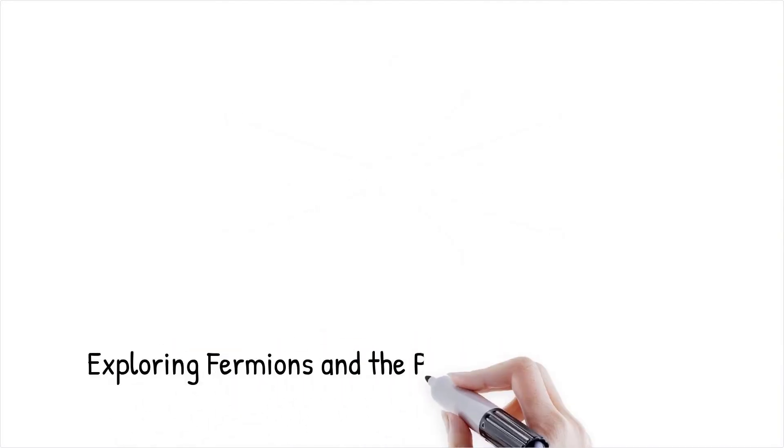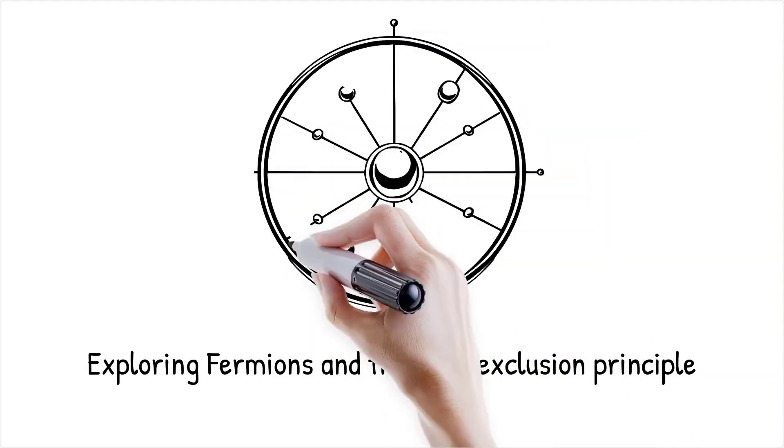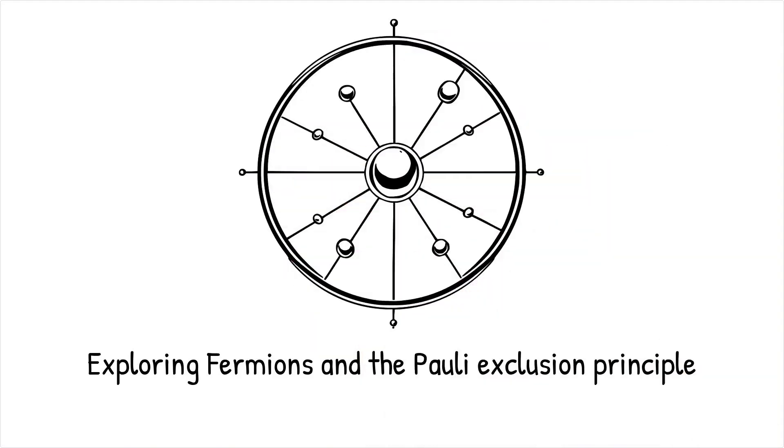Fermions (particles like electrons and protons) obey Fermi-Dirac statistics and are governed by the Pauli exclusion principle, which states no two fermions can occupy the same quantum state.